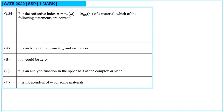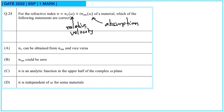Hello GATE aspirants, welcome to part 13 of the GATE Solid State Physics series. Question number 24: for the refractive index n equal to n_r(omega) + i·n_im(omega) of a material, which of the following statements are correct? The real part n_r gives relative velocity and the imaginary part n_im gives absorption. First, n_r can be obtained from n_im and vice versa.